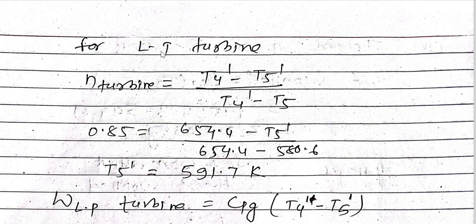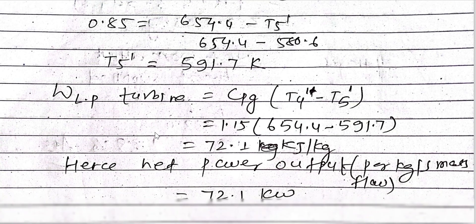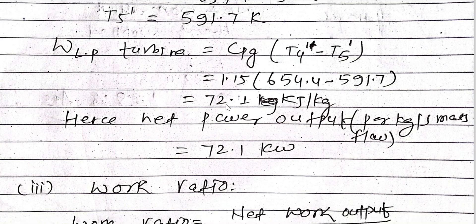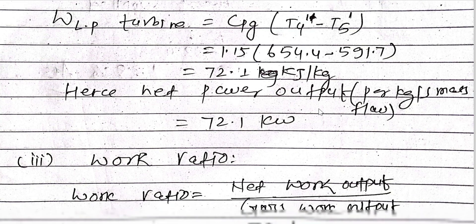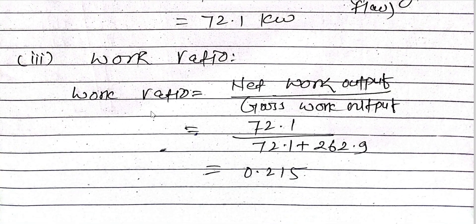T5 = 580.6 K. Then, applying the LP turbine isentropic efficiency: eta_LP = (T4' - T5') / (T4' - T5), we find T5' = 591.7 K. The work done by the LP (power) turbine is: W_LP = Cp_g × (T4' - T5') = 72.1 kJ/kg. Hence, the net power developed per kg per second is 72.1 kW.